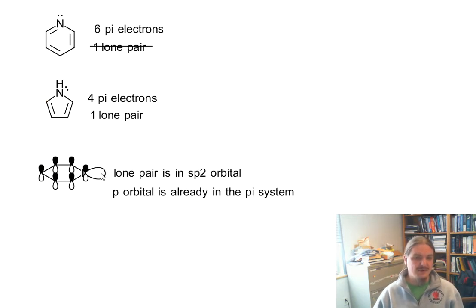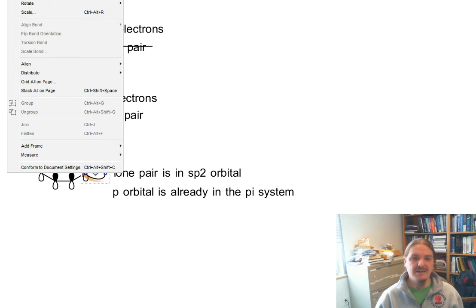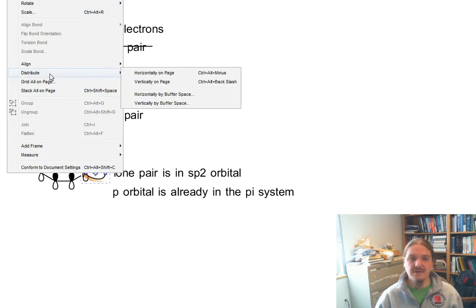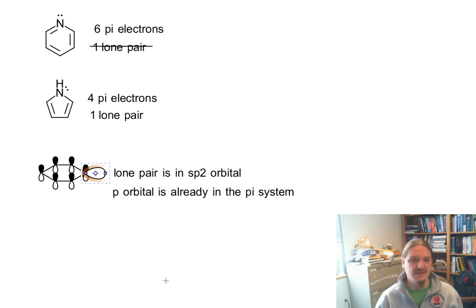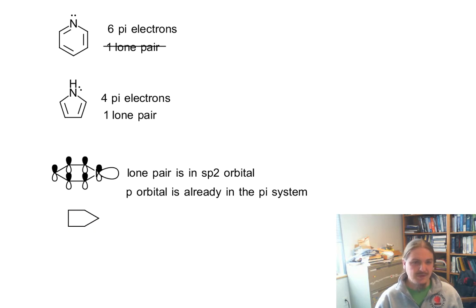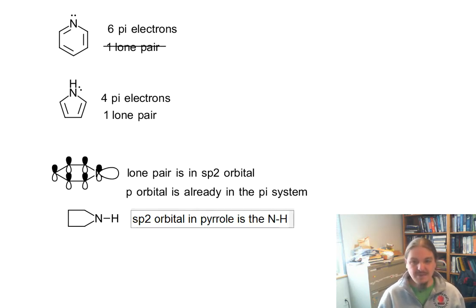This is an important thing for pyridine. Whereas pyrrole, now we're a little bit different. That sp2 orbital in pyrrole is the nitrogen-hydrogen bond.